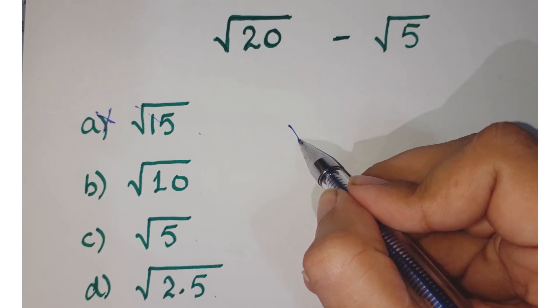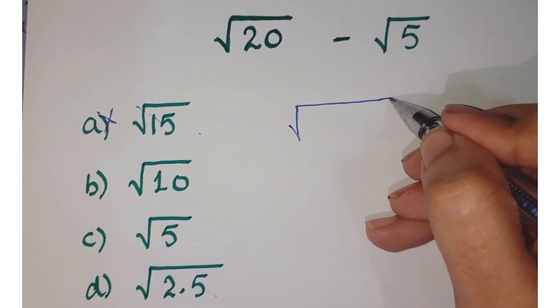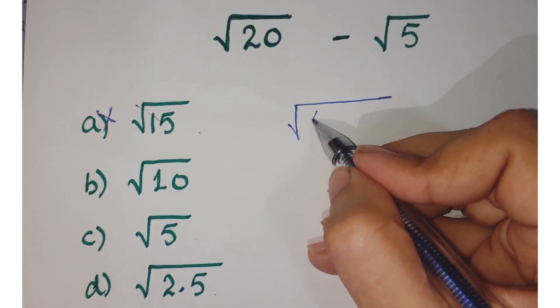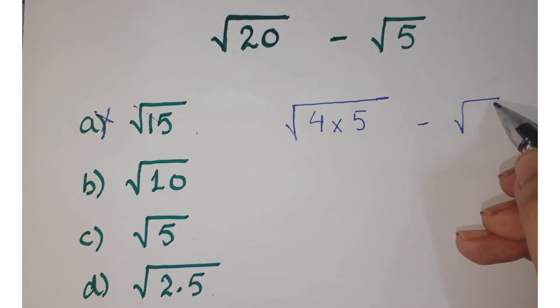You are given square root of 20. So you can break up this square root of 20 into two terms such that one is a perfect square. So you can write its factors as 4 times 5 minus square root of 5.